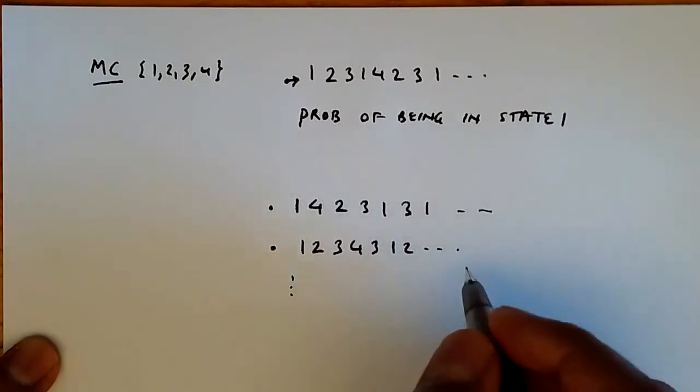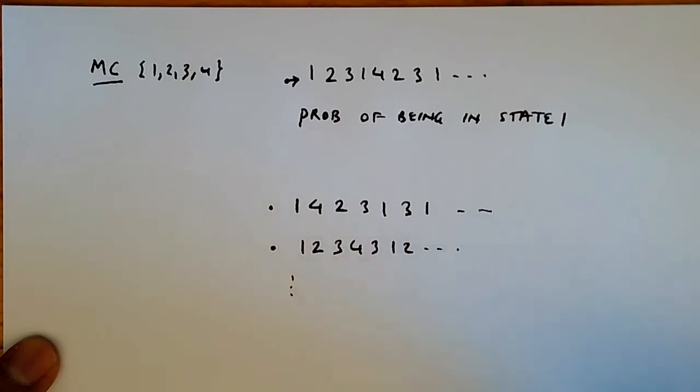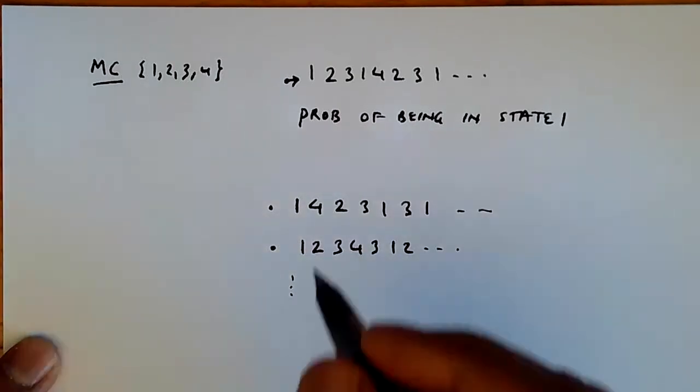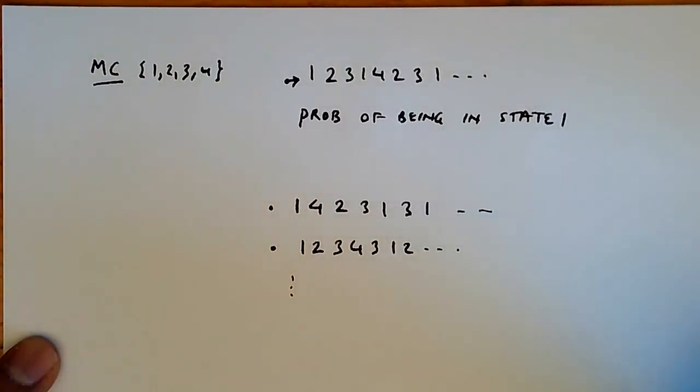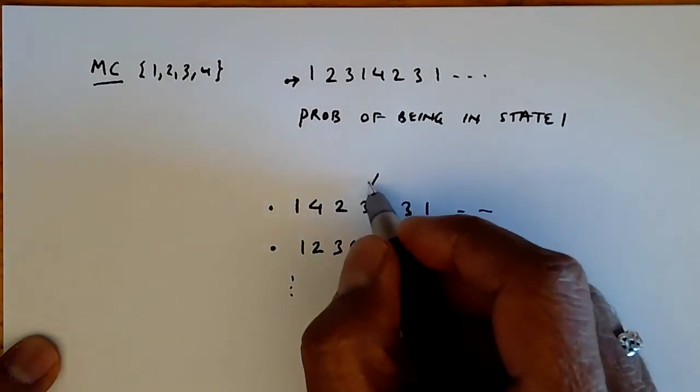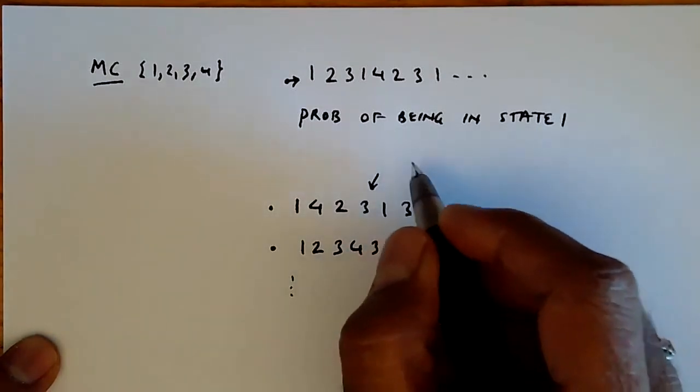Now, if I had a set of trajectories like this, and I wanted to compute the probability of being in state one, I could do it as an ensemble, but let's say I pick this time instant over here. This is, let's say, time step number four.